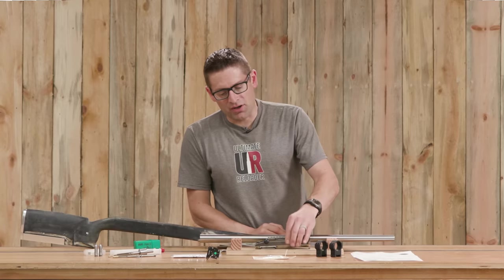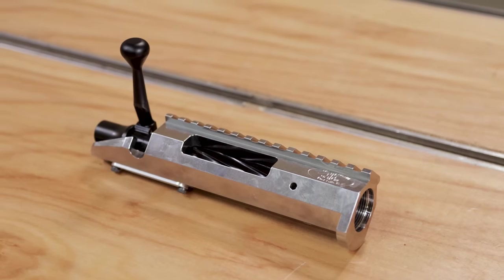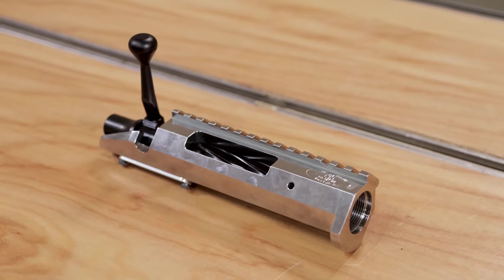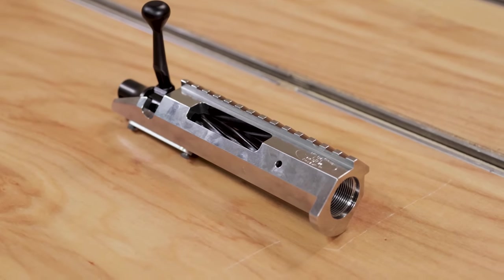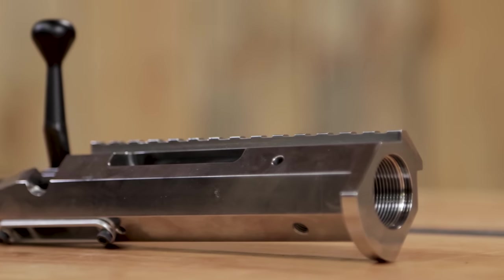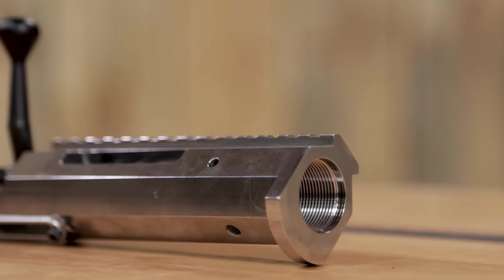This build is centered around a Bat Model B action. This is a very popular bench rest action. It's got a load port on one side, an ejection port on the other side, and an integrated picatinny rail. This is absolutely the pinnacle of precision.